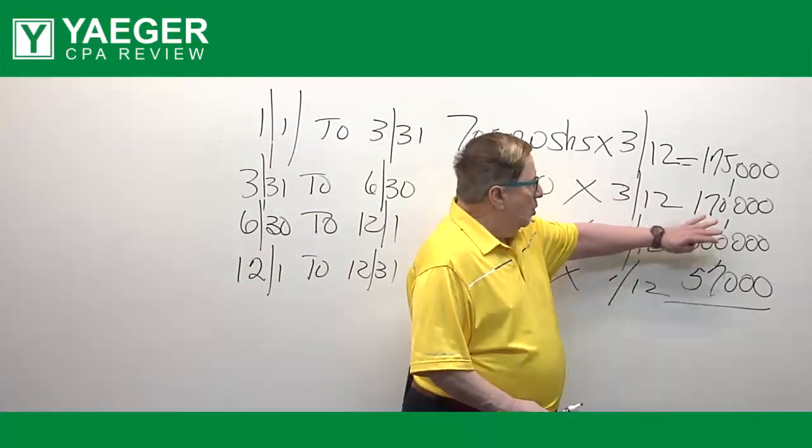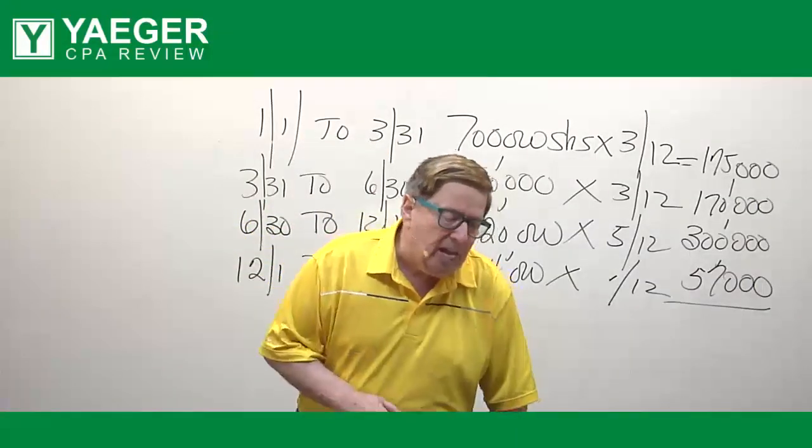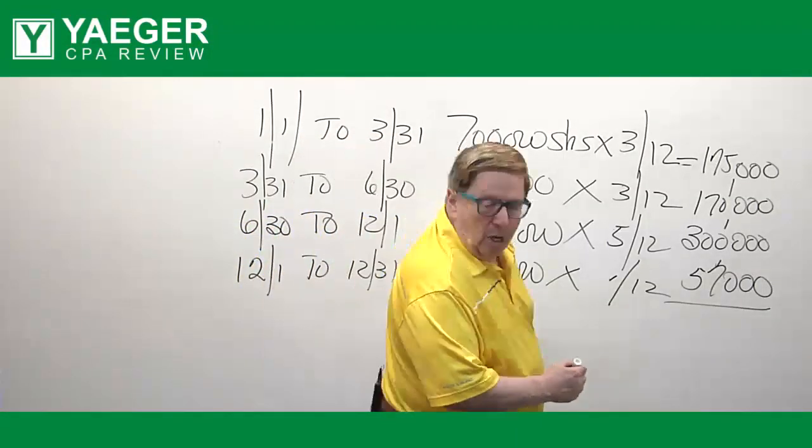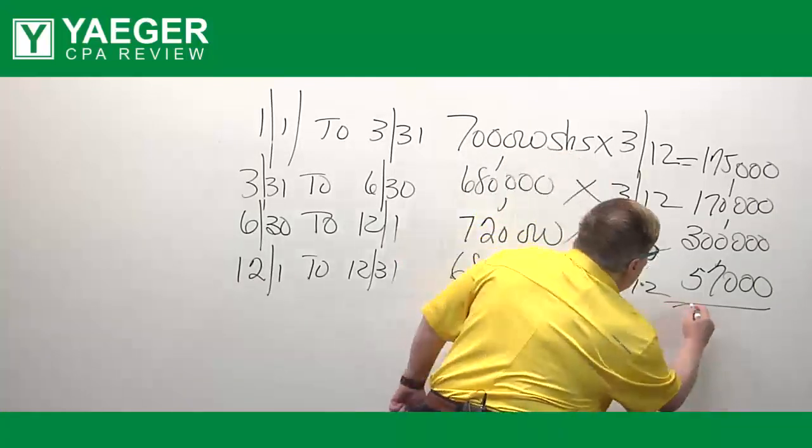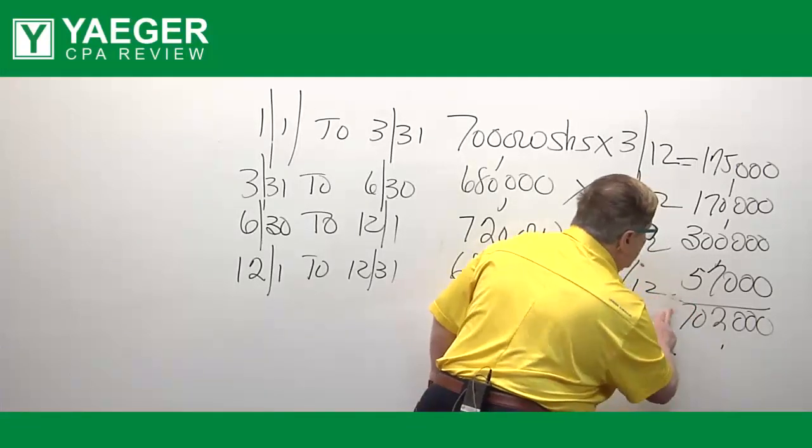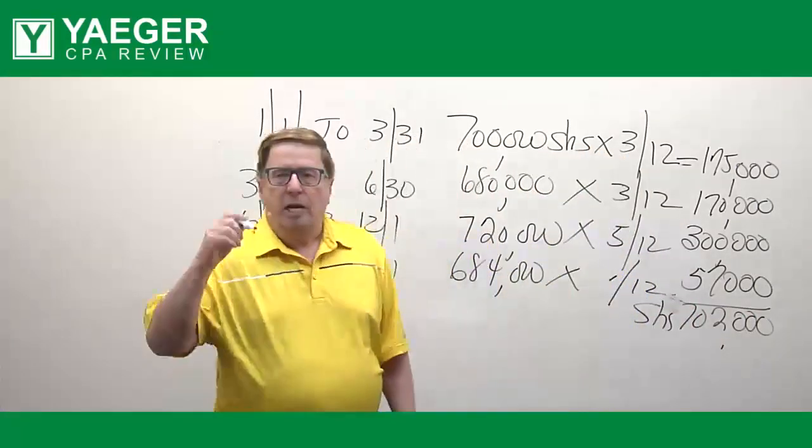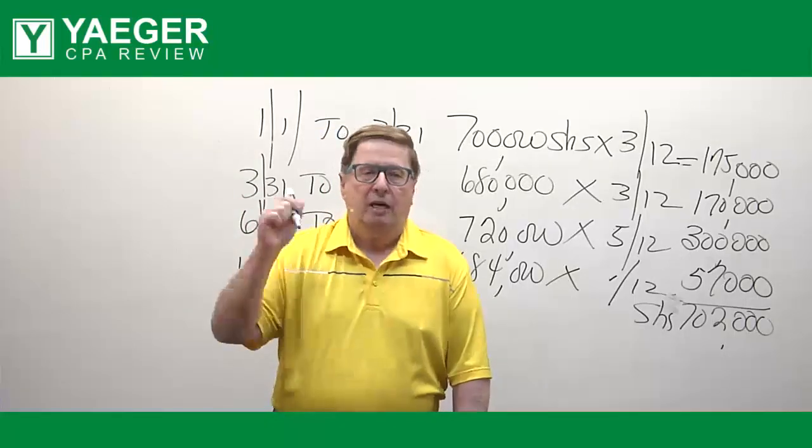So we add up the 175, the 170, the 300, and the 57,000. Our weighted average number of shares is 702,000 shares. And this will be shares, not dollars. And this will be the denominator in your basic earnings per share calculation.